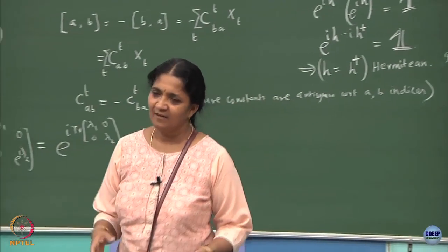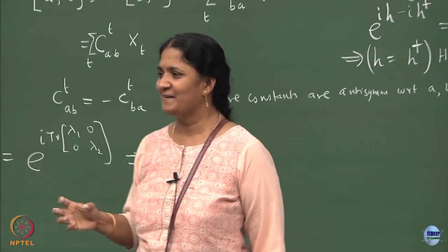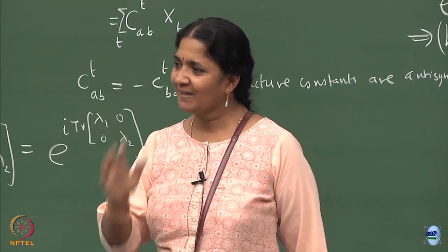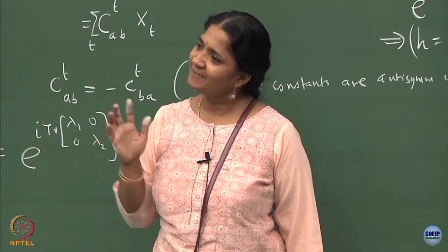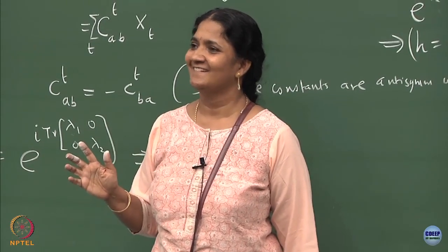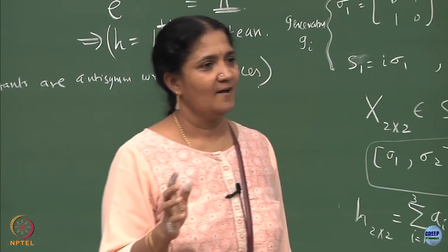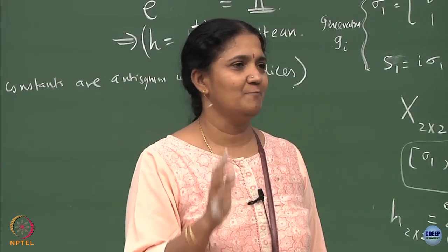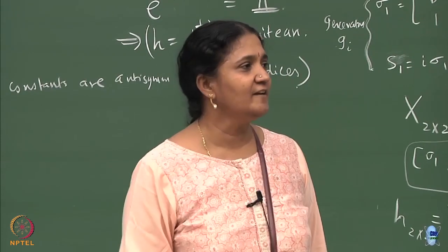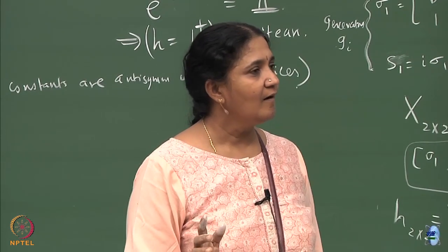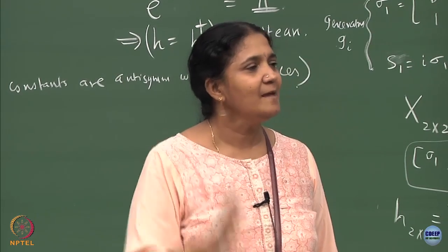A question you can ask is: how many parameters does O3 or SO3 have? Whether you are working with O3 or SO3, the number of continuous parameters is only 3. But if you are working with U2, how many parameters are there? If you do not put the determinant to be plus 1, is the number of parameters the same or different?